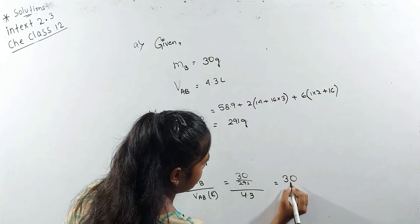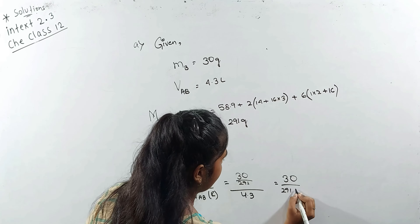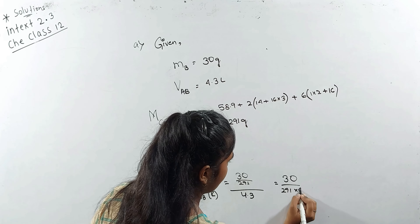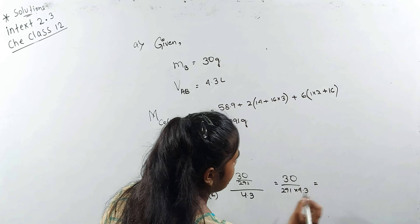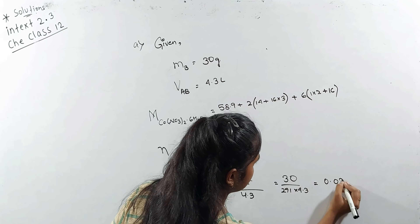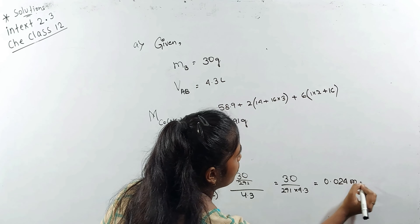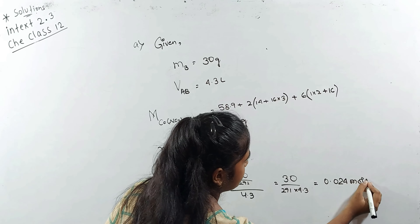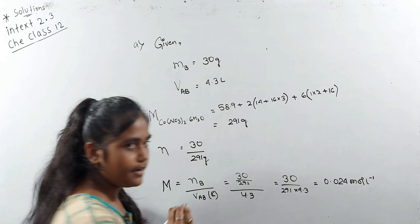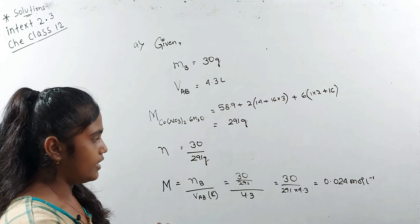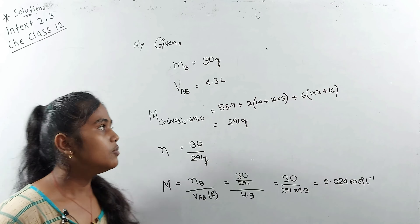So now we have to find the moles. Moles equals mass given divided by molar mass, which is 30 divided by 291 grams. So this gives us our moles.